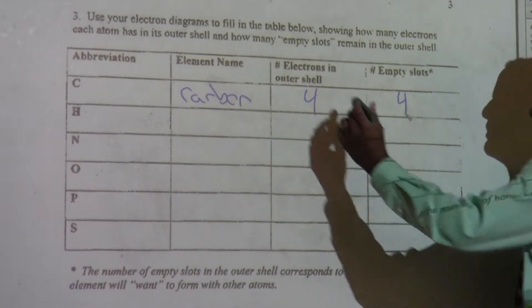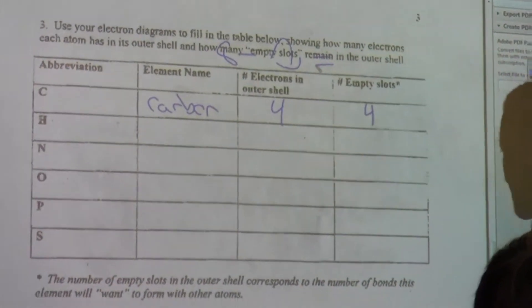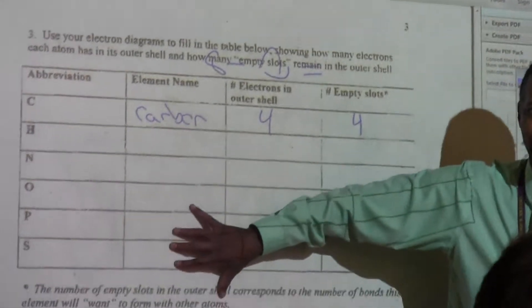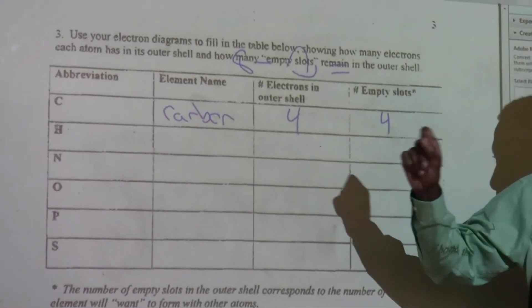Okay. Here's a simple way to do this. Take 8 minus whatever you have in this number to get this number. Alright? And you're going to notice some similar patterns.